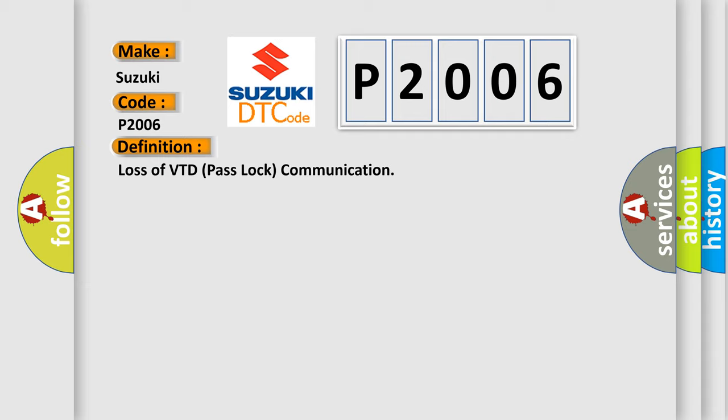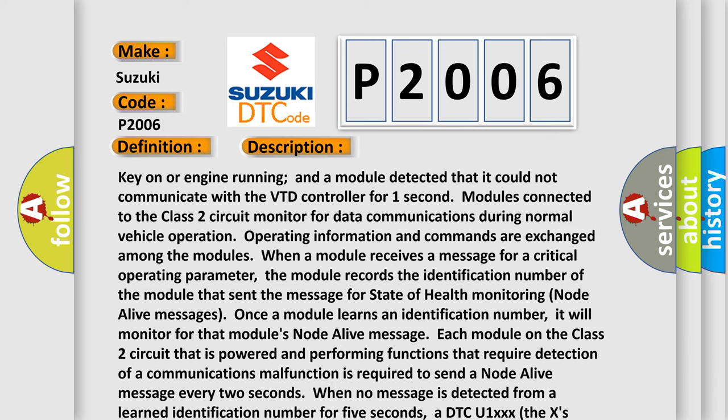Here is a short description of this DTC code. Key on or engine running, a module detected that it could not communicate with the VTD controller. For one second, modules connected to the class 2 circuit monitor for data communications during normal vehicle operation. Operating information and commands are exchanged among the modules. When a module receives a message for a critical operating parameter, the module records the identification number of the module that sent the message for state of health monitoring — node alive messages. Once a module learns an identification number, it will monitor for that module's node alive message. Each module on the class 2 circuit that is powered and performing functions requiring detection of a communications malfunction is required to send a node alive message every 2 seconds. When no message is detected from a learned identification number for 5 seconds, a DTC U1-XXX — where the X's identify the 3-digit identification number — is set.